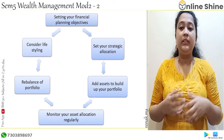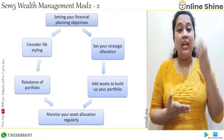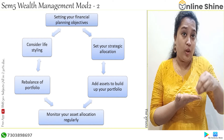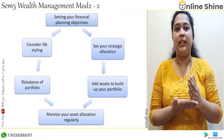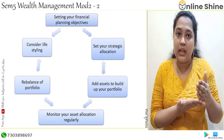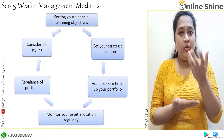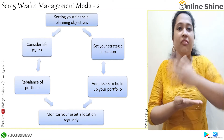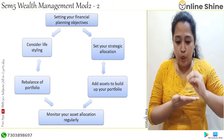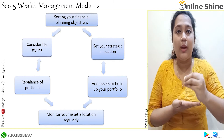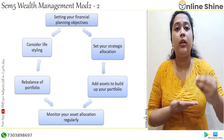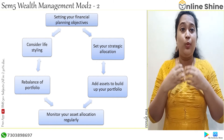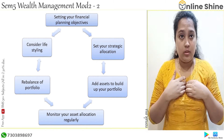The second step is to set your strategic allocation. This says that the allocation you will do of your assets should be strategized. You have to make different strategies and then pick one. For example, I pick a strategy of 50% equity, 20% in bonds, and 30% in commodities. That is the strategy I choose.